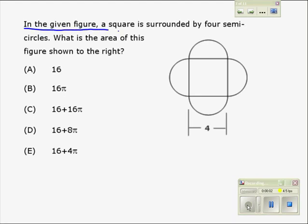In the given figure, a square is surrounded by four semicircles. What is the area of this figure shown to the right?